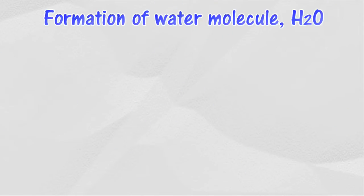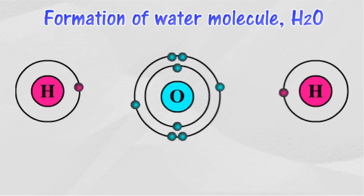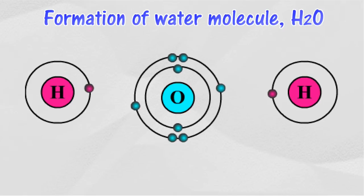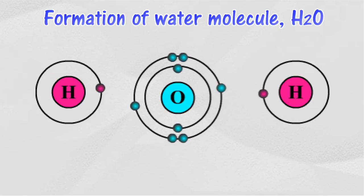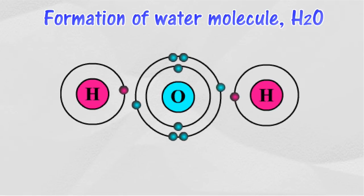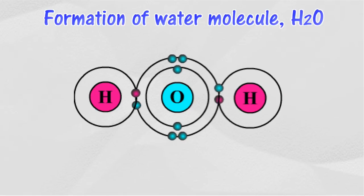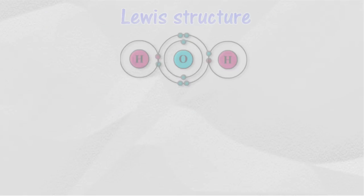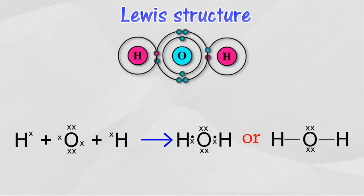The next example is the formation of a water molecule. Each hydrogen atom has an electron arrangement of one, and the oxygen atom has an electron arrangement of 2.6. The outermost shell lacks one electron to achieve a stable electron arrangement. One pair of electrons is shared between two hydrogen atoms and one oxygen atom to produce a water molecule. Each hydrogen and oxygen atom in the water molecule achieves the stable electron arrangement of two and 2.8, and a covalent bond is formed. The Lewis structure for the water molecule is shown as follows.